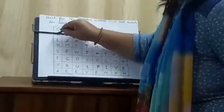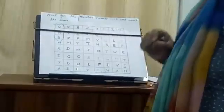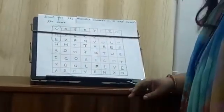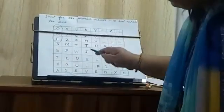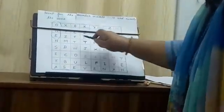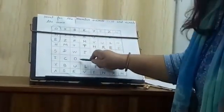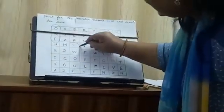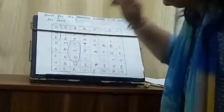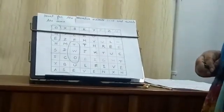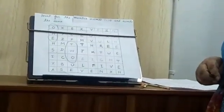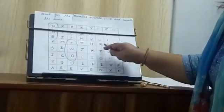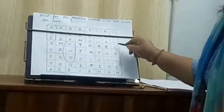So let's circle it. Now let's find out where is 2. T, W, O. 2. It's here. Circle it now. Now children, where is 3? T, H, R, E, E. 3. Now let's circle it.